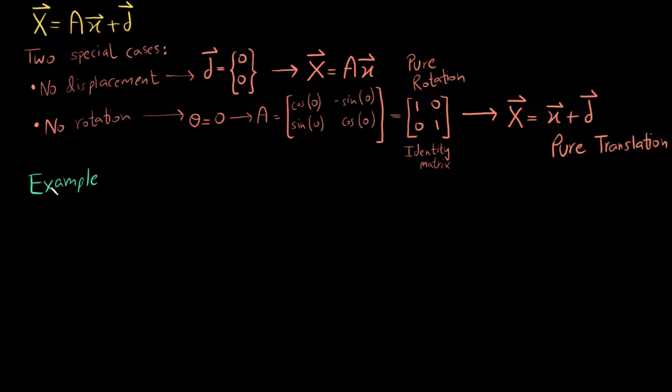Now let's solidify our understanding of this with the help of an example. So I have drawn a fixed frame F and a moving frame M. Notice that the moving frame's x axis is vertically pointing upwards and the y axis is pointing towards the left. And the d vector is the displacement vector which is the displacement of the origin of the moving frame with respect to the fixed frame.